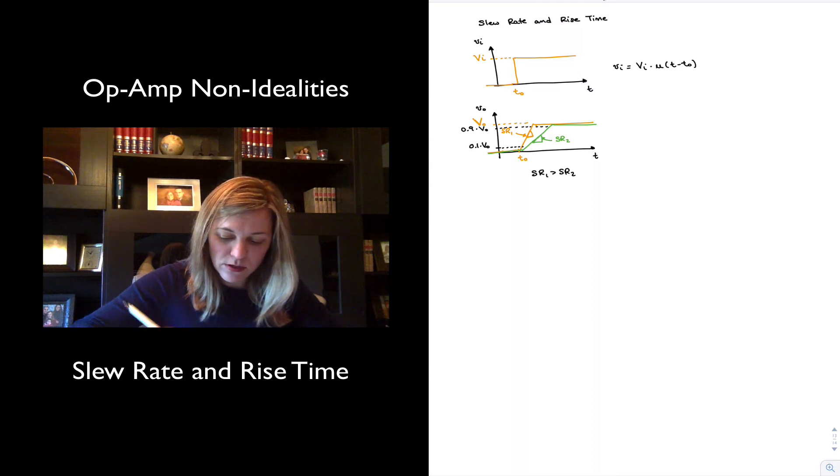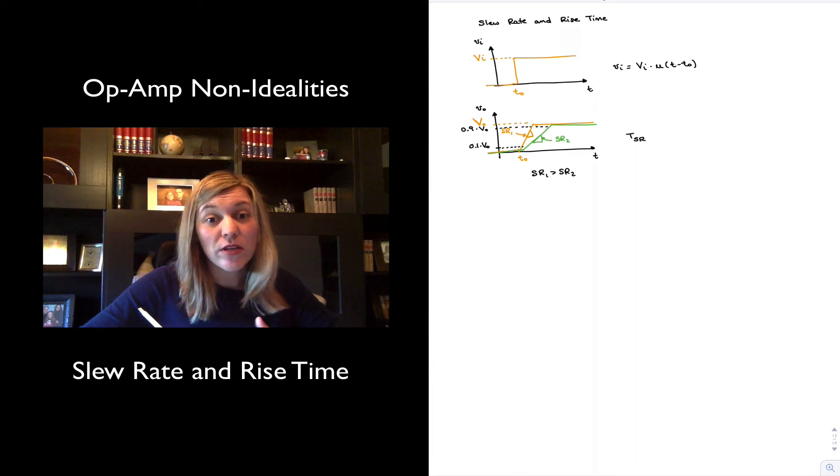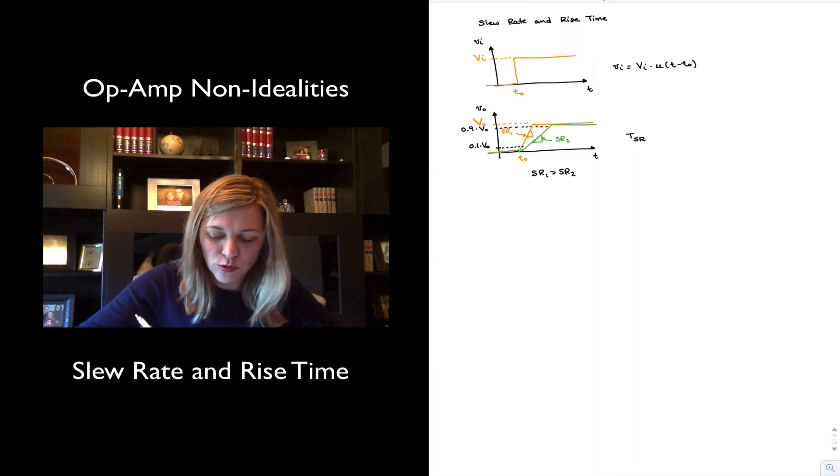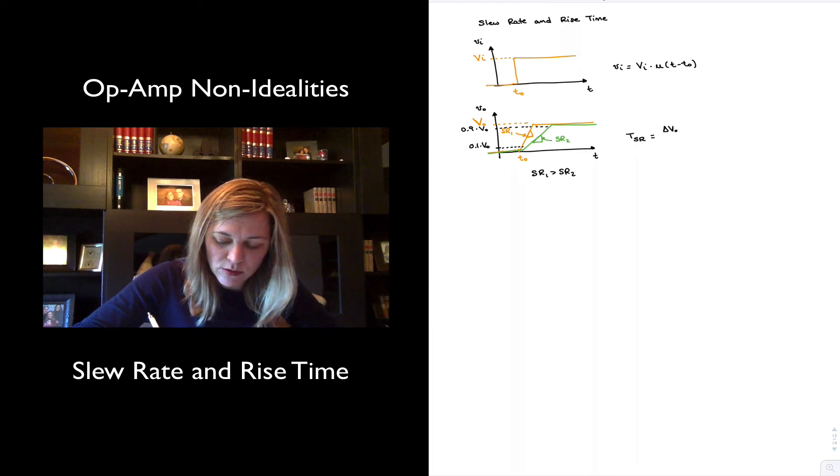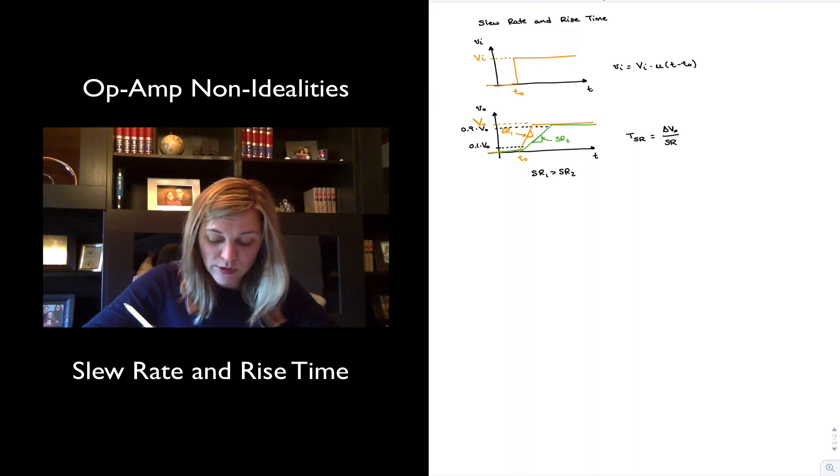In this case, the rise time, which we're going to refer to as TSR - and the reason for that is because it's the rise time due to the slew rate limitation as opposed to earlier when it was due to the bandwidth limitation - that's going to be equal to delta Vout divided by the slew rate. Since essentially the slew rate is going to be equal to TSR divided by delta Vout.